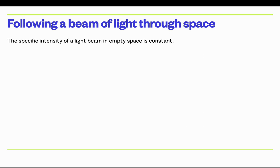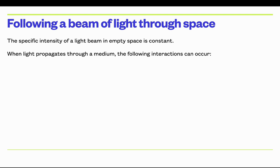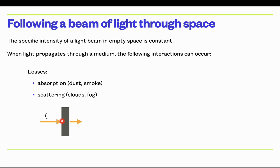Now let's follow a beam of light through space. The specific intensity of a beam of light in empty space is constant. When light propagates through a medium, the following interactions can occur. For losses, you can absorb energy out of the light beam by heating dust or smoke particles, or you can scatter radiation out of your line of sight into a different direction, removing energy from the beam.